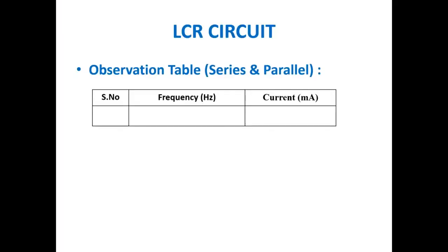Observation table for series and parallel connection: the table contains serial number, frequency in Hz, and current in milliammeter. Operate the signal generator at different frequencies and note down the frequency values at regular intervals along with the corresponding current value shown in the milliammeter.